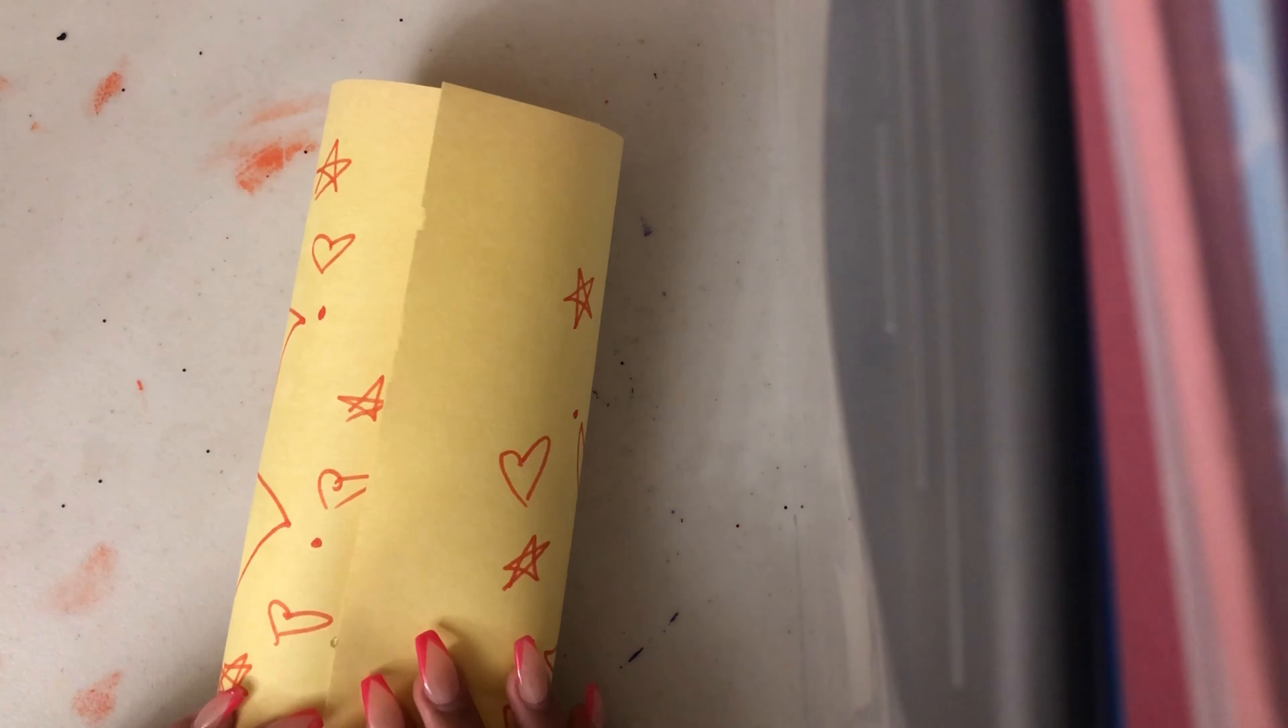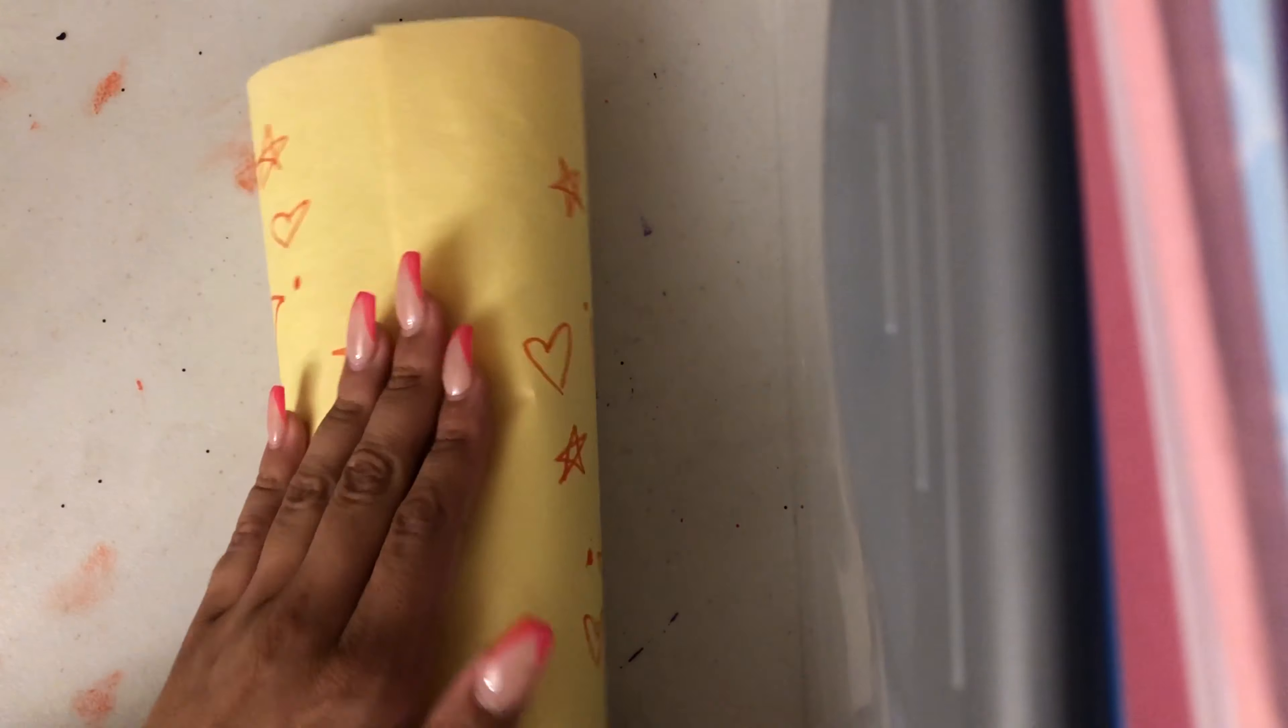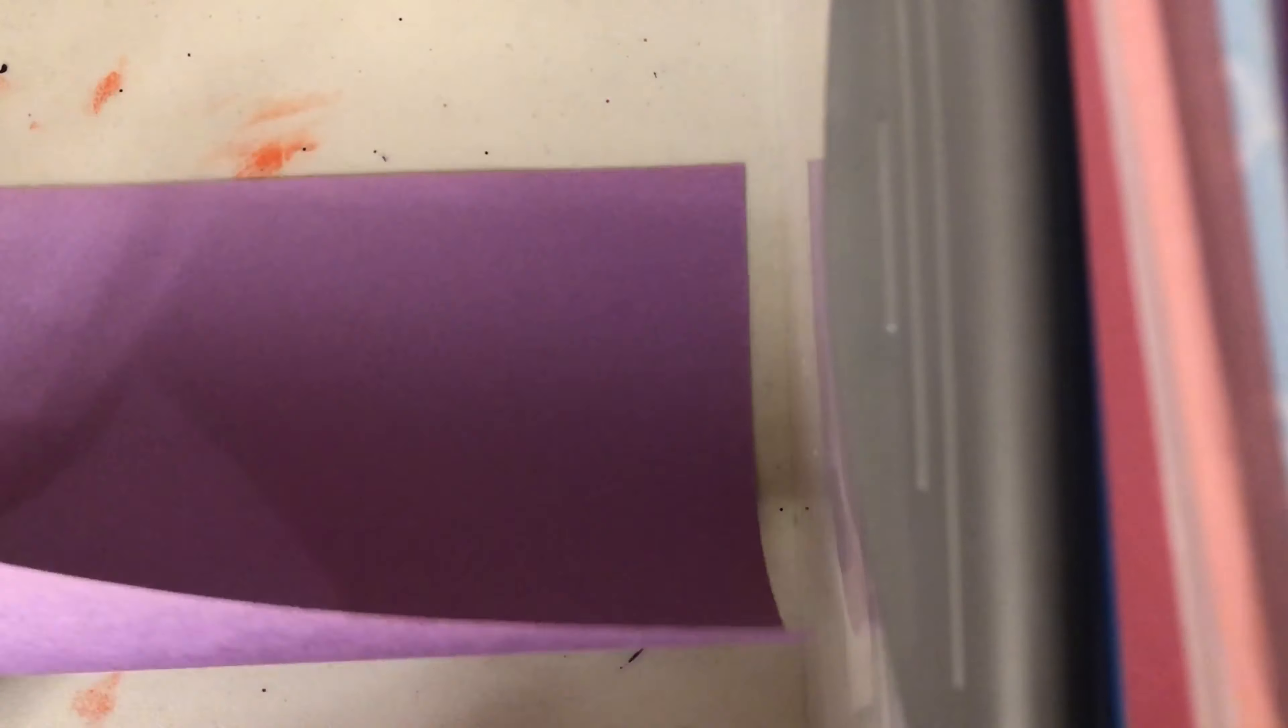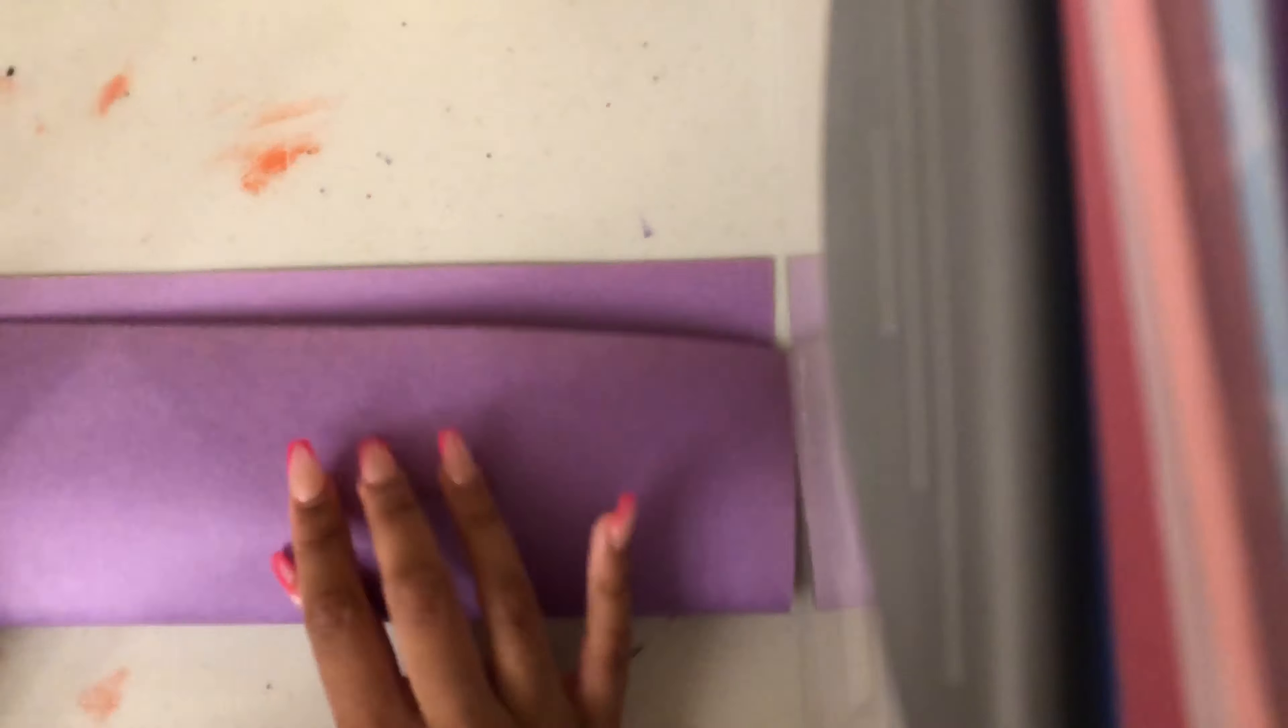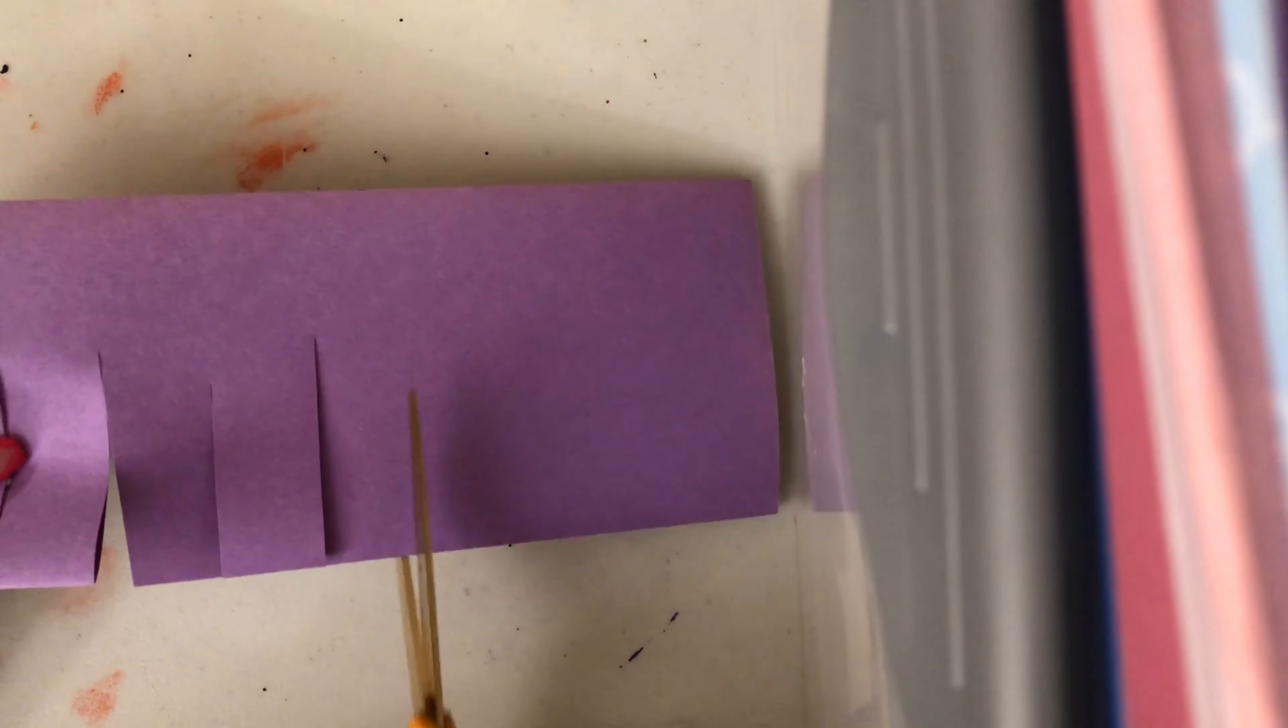Once we set that aside to dry, we're going to take our second piece of construction paper and fold it horizontally so the bottom edge meets the top edge. Then you're going to take scissors and make cuts in the middle of the paper.